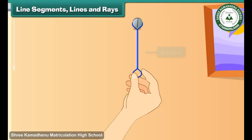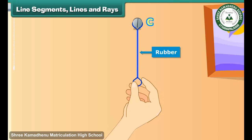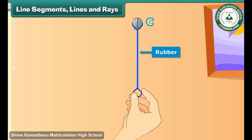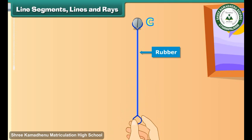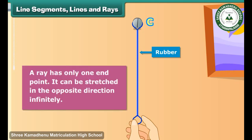Look at this thin strip of rubber. Let us nail it to the wall and name the point C. The other end of the rubber is free. Let us stretch it — first a little, then a little more, and then some more. What we get is a ray. A ray has only one end point and can be stretched in the opposite direction infinitely.